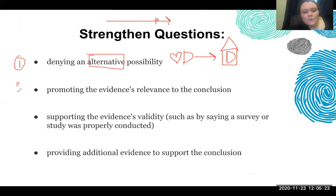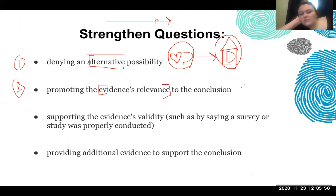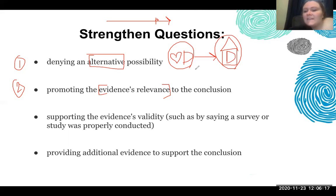Another way we can strengthen an argument is by promoting the evidence as relevant to the conclusion. What does loving a dog have to do with actually getting a dog? I love a lot of things — I love elephants, but I'm not going to get an elephant. So we have to show why this evidence is relevant. What new information could we bring in? Something like: 'People who love dogs are significantly more likely to be able to take care of them' — that connects loving dogs to actually getting one. Like, why does this matter? That's what we're bridging.